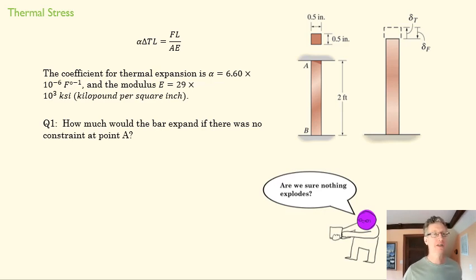How much would the bar expand if there were no constraint at point A? Remember we went from 60 degrees to 120 degrees. That's essentially the left side of your equation.